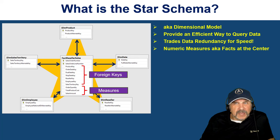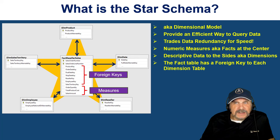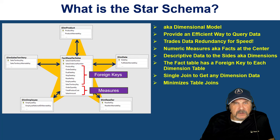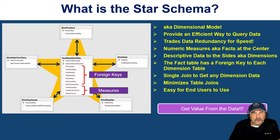Numeric measures, also known as facts, are at the center and it's typically called the fact table. Descriptive data is stored in the side tables, called dimensions. The fact table has a foreign key to each dimension table, and you can get to any dimension with a single join. We minimize the number of table joins needed because we've denormalized the dimension tables themselves — they have everything you could ever want in that dimension, so we don't need to join one dimension to another. This makes it really easy for end users to get their head around, jump in, and start being productive. That's the goal of the star schema: get the value out of the data right away.